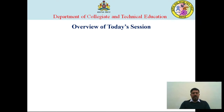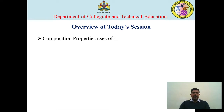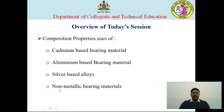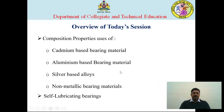In this session, we are going to learn about composition, properties and uses of cadmium-based bearing material, aluminium-based bearing material, silver-based alloys, and non-metallic bearing materials. We will discuss the typical properties, composition and uses of these four bearing materials. After that, we will have a new topic — self-lubricated bearings — and then a multiple choice question and answer session.